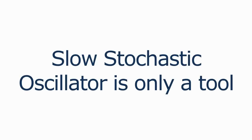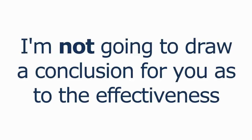As with any technical analysis trading indicator, the slow stochastics oscillator is only a tool and should only be used as part of an overall trading strategy. I'm not going to draw a conclusion for you as to the effectiveness of it, but I'm going to cover how you can trade with it. Everything covered can also be used with the fast stochastics as well. I prefer the slow version mainly due to the smoothness of the indicator.